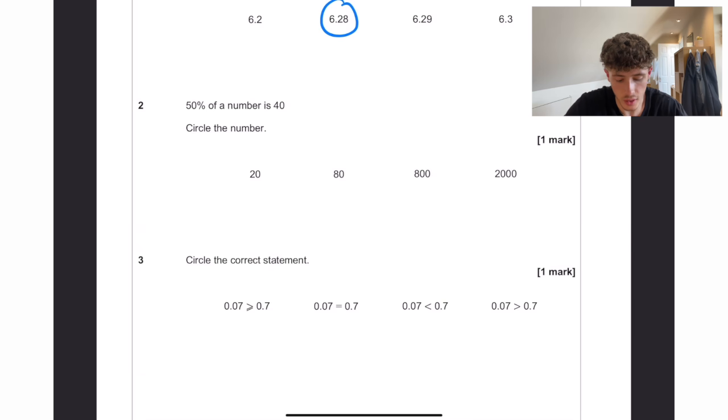50% of a number is 40, so that whole number must be 80 because 50% is half of it.